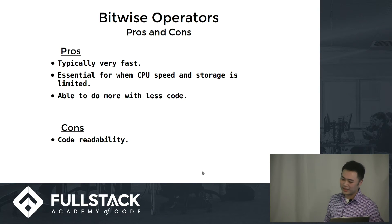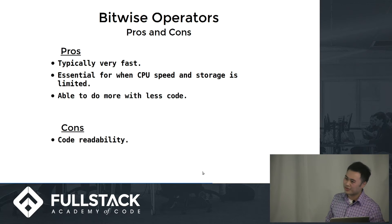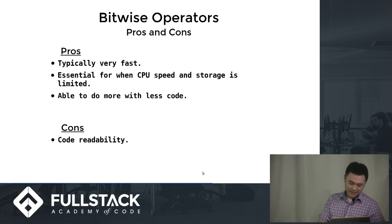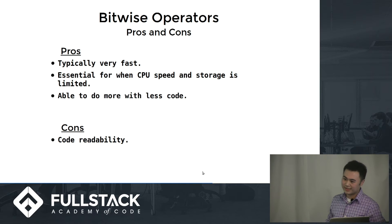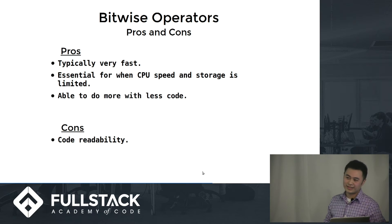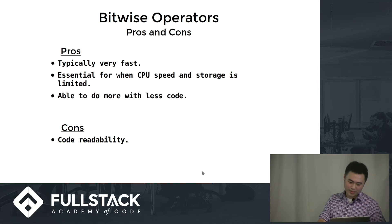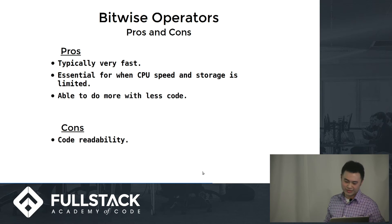So why use bitwise operators? Typically they're very fast, though I'm not sure if that's the case with JavaScript since it doesn't have it hardwired. They're essential for when you have limited CPU speed or storage, since when you operate with bits you can modify individual bits inside a single integer to store values with a flag or mask. You're able to do more with less code, but as a lot of people who've done code wars have seen, it's not necessarily more readable.